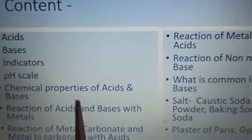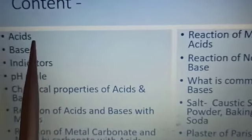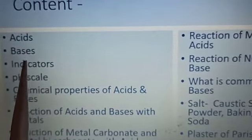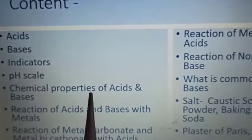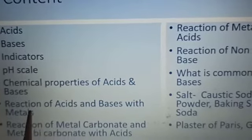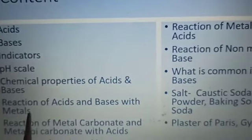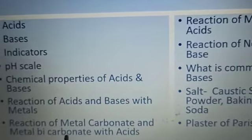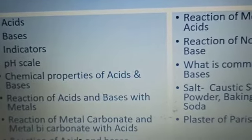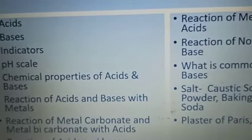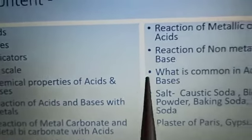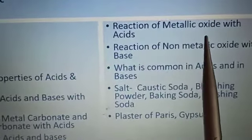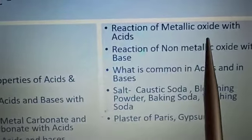So what is the content? Have a look at this. In this chapter you are going to study acids, bases, indicators, pH scale, chemical properties of acids and bases, reaction of acids and bases with metals, reaction of metallic carbonate and metal bicarbonate with acids, reaction of acids and bases, reaction of metallic oxide with acids, reaction of non-metallic oxide with base, and what is common in acid and base.